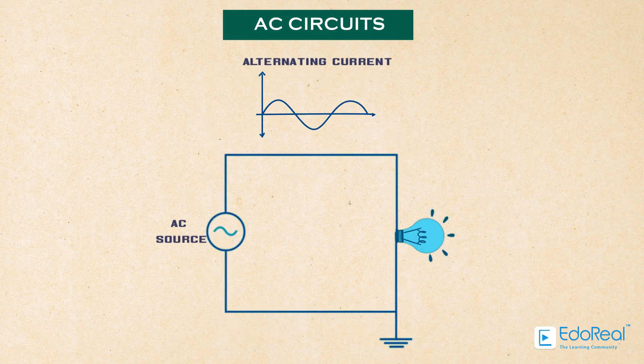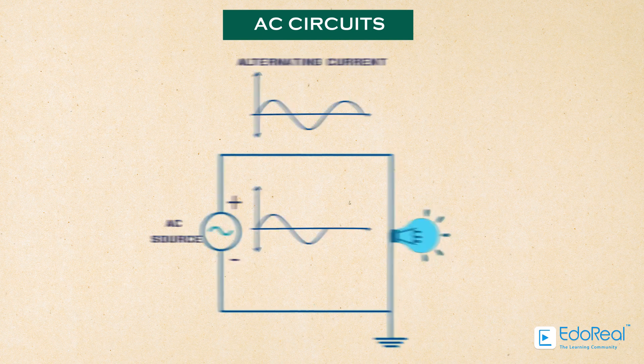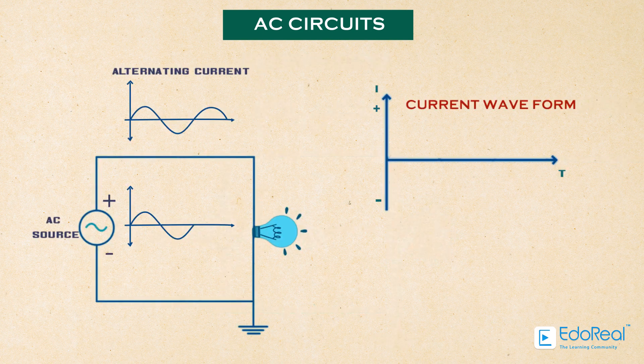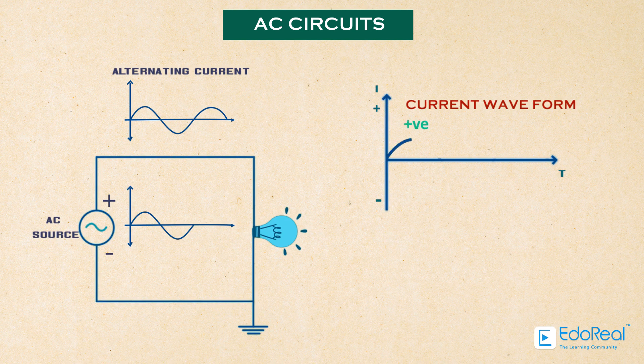Alternating current describes the flow of charge around an electrical circuit that changes direction periodically. The current periodically changes its direction from positive to negative.